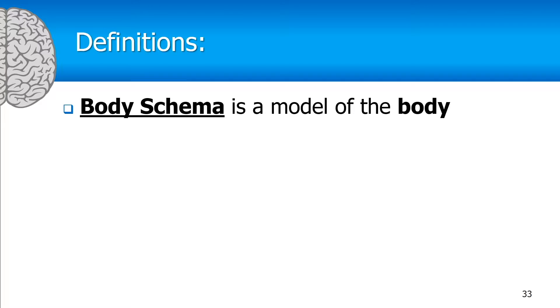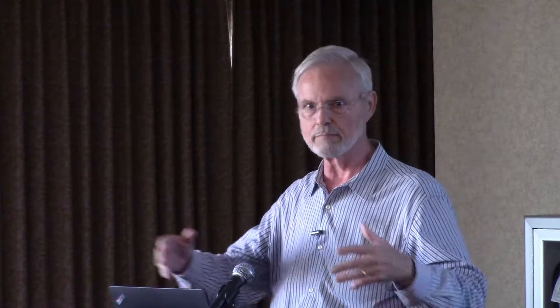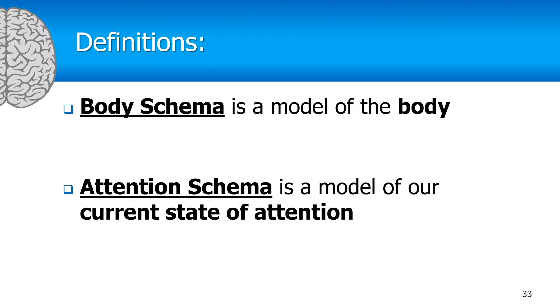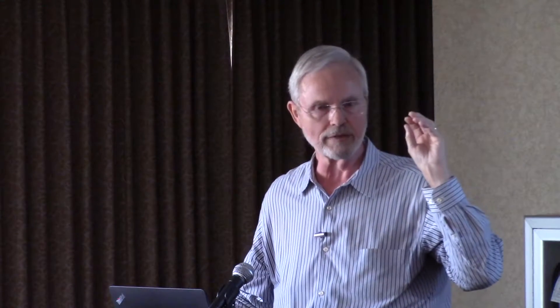Now let's look at attention schema theory. The first thing you might ask is: what's an attention schema? A body schema is a model of the body — there's the physical body, but then there's the mental model of the body that the brain has, with information about the angles of all the limbs and the position of the body in the world. Similarly, the attention schema is a model of our current state of attention. There's an underlying neurological mechanism that pays attention — neurons firing. The attention schema is not that mechanism; it is a model of what that mechanism is doing.